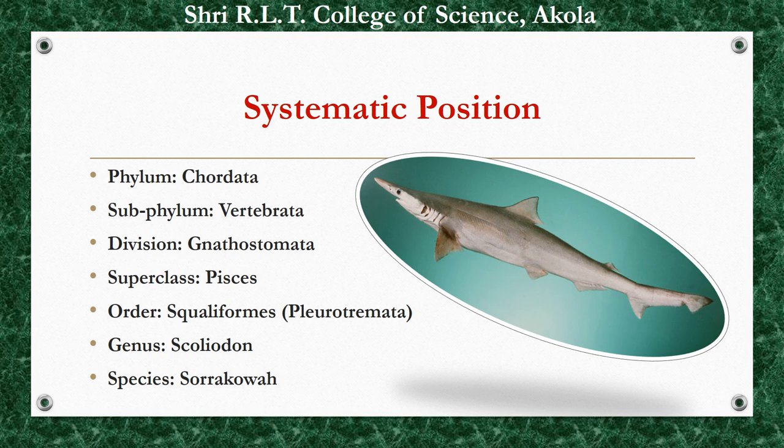The order is Pleurotrimata or Squaliformes. Genus is Scoliodon and species is Sorrakowah. It is commonly known as Common Indian Dogfish or the Black Shark.